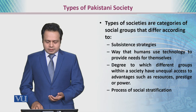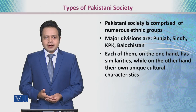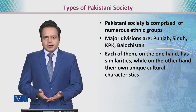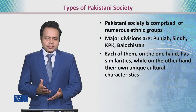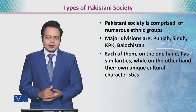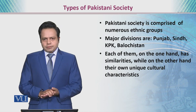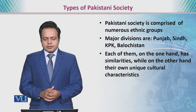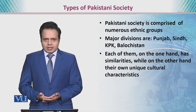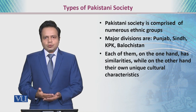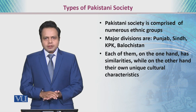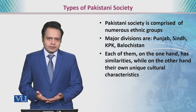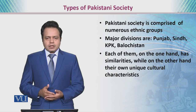There are other factors as well, which include ethnicity and language. In Pakistani society, we have numerous ethnic groups distinguished based on their cultural and linguistic characteristics. Major divisions are based on provincial distinctions — Punjabis in Punjab, Sindhis in Sindh, Pashtuns in KPK, and Baloch in Balochistan — each having similarities as well as differences to be discussed in upcoming modules.